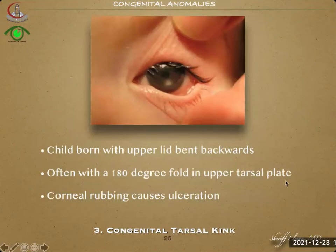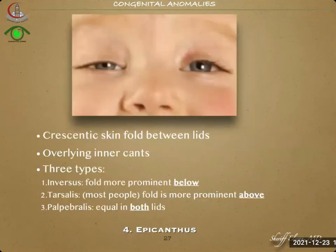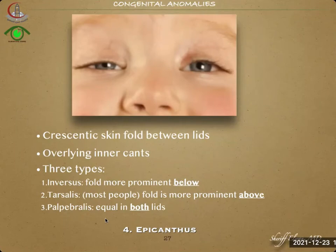The tarsus might also be kinked — this occurs in the upper eyelid where the tarsus is rotated inwards with a 180-degree fold in the upper tarsal plate, causing corneal rubbing with or without ulceration, and this can be corrected surgically. The epicanthus is a crescentic skin fold overlying the inner canthus. There are three types: the tarsalis, the palpebralis, and the inversus. In the palpebralis, both upper and lower folds are equal; in the tarsalis, the fold is more prominent above; and in the inversus, it is more prominent below.